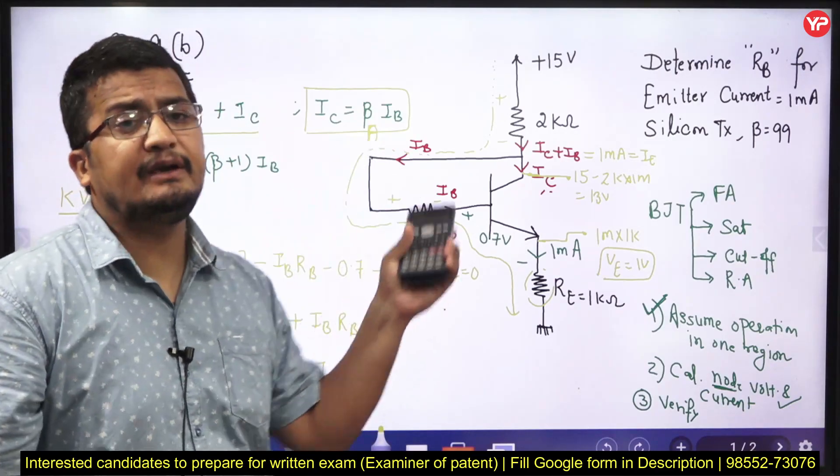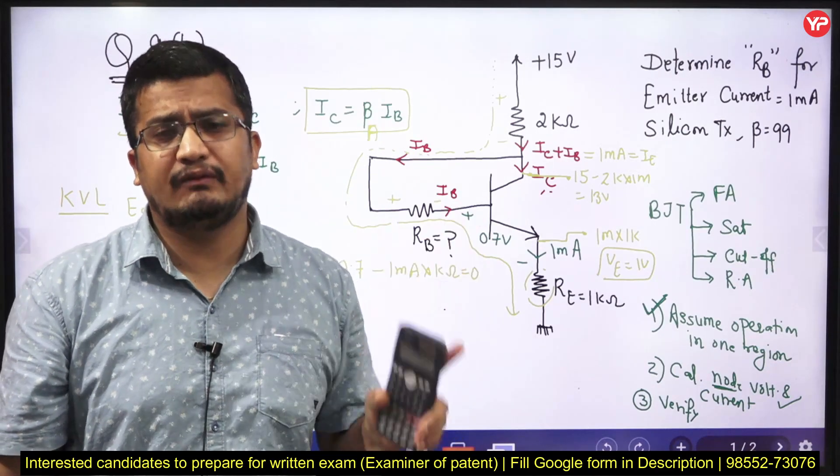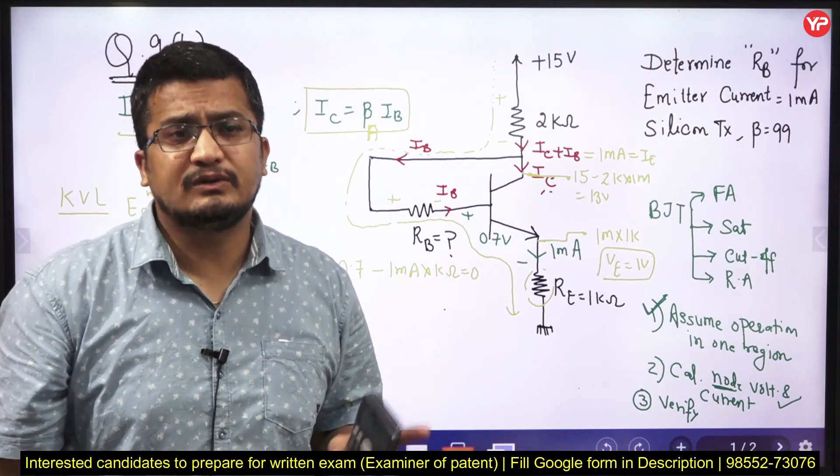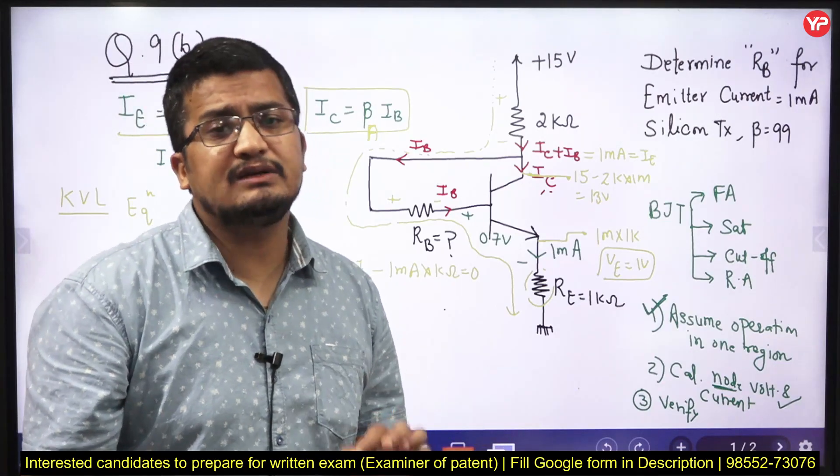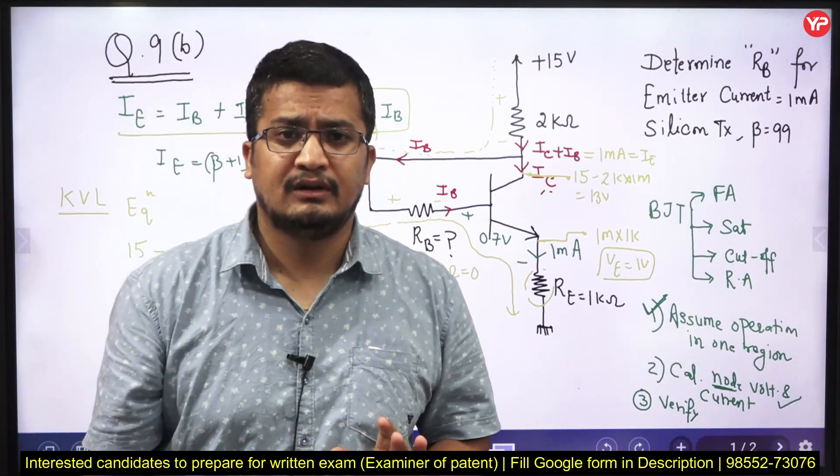This is applicable only in the forward active mode. This is beta forward or beta active. For saturation, this is with the beta force, not with the beta active, beta forward. That is why you can see I had solved the entire circuit with the help of the relations which are equally susceptible in the forward active mode.